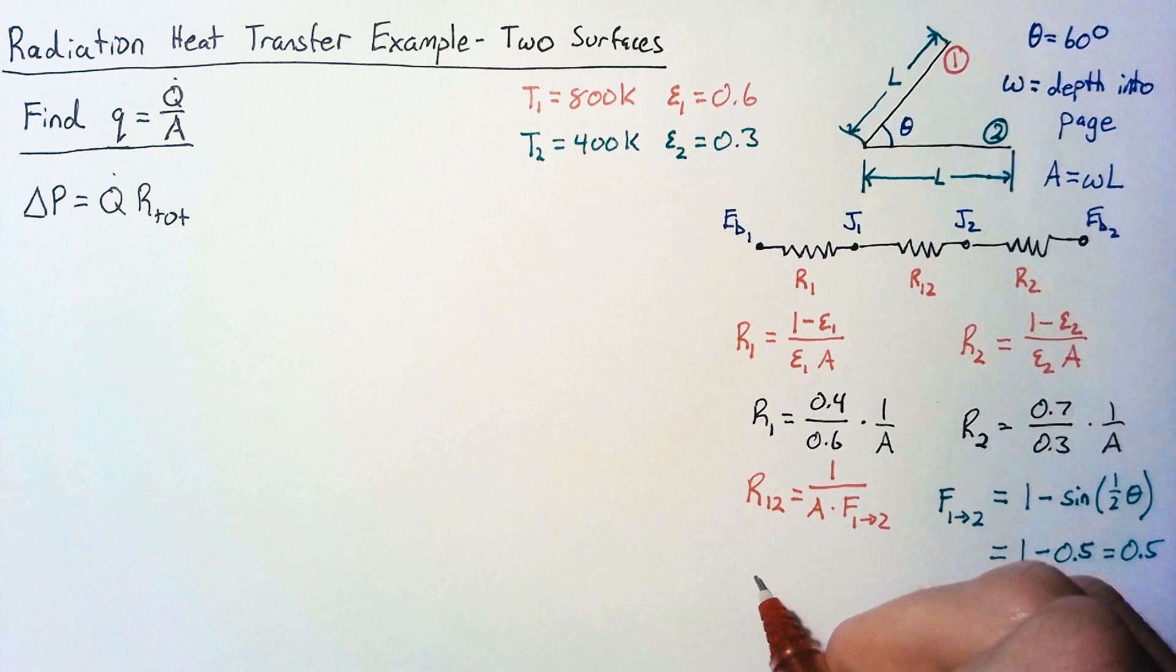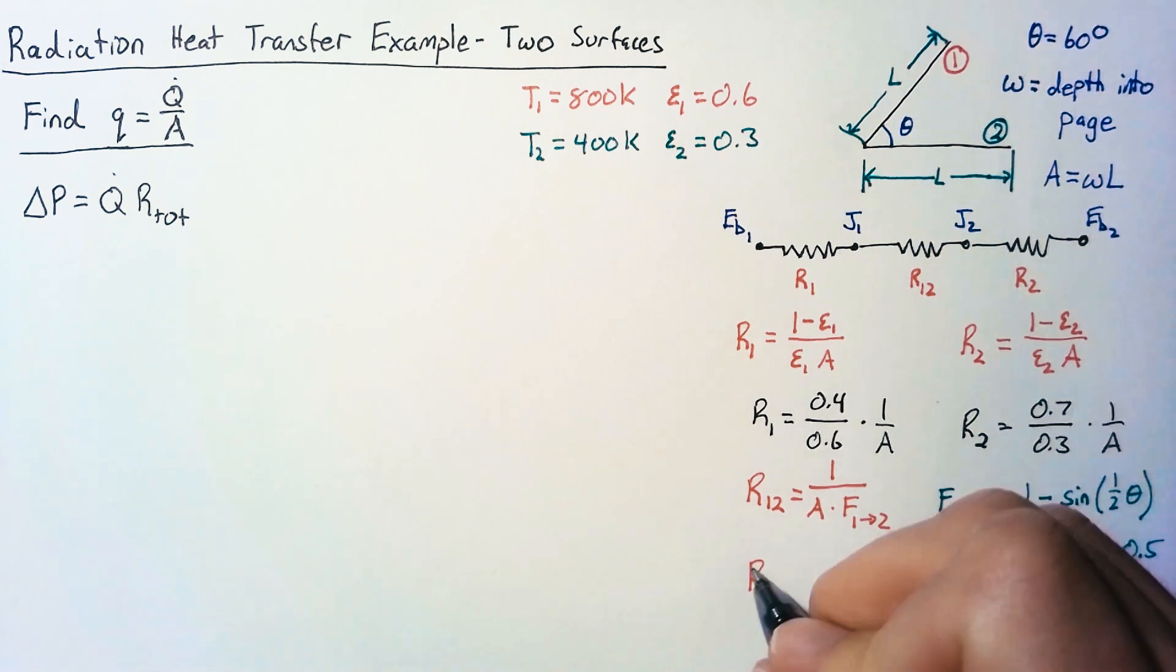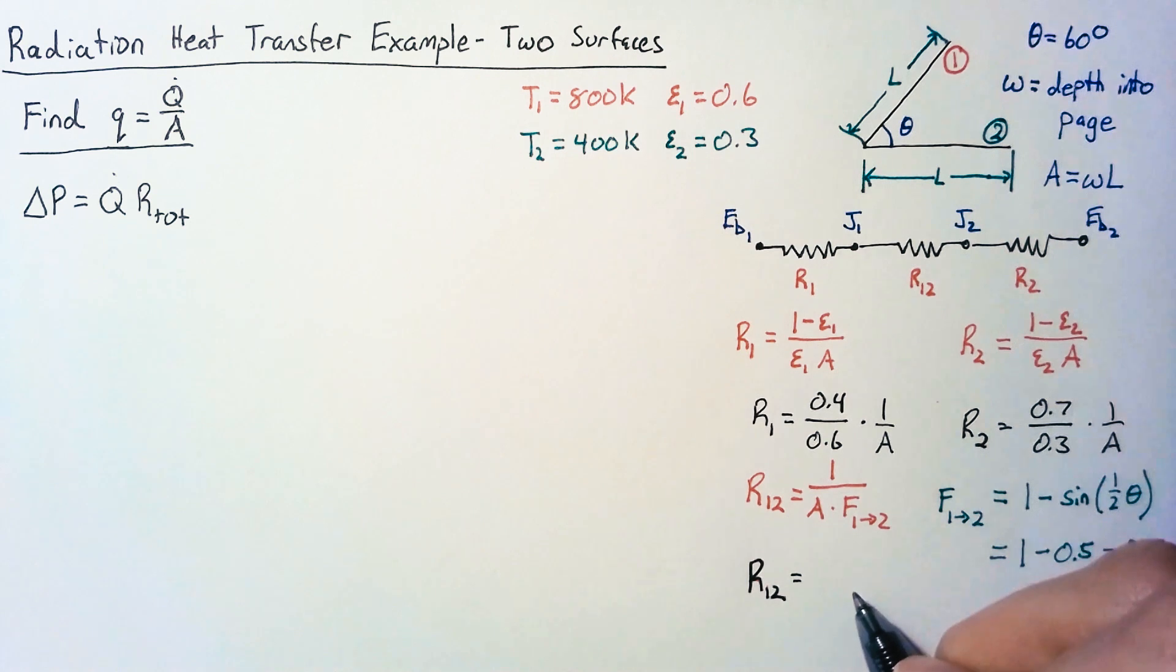So plugging this 0.5 in, we end up with a space resistance, R12, which is equal to 1 over 0.5 or 2 times 1 over A.